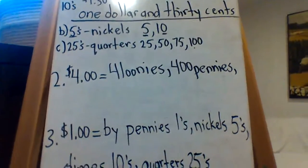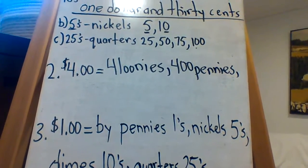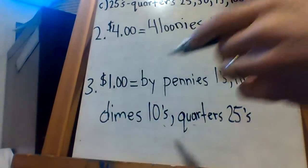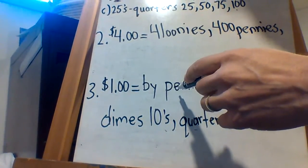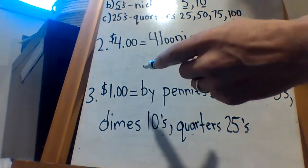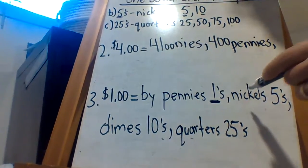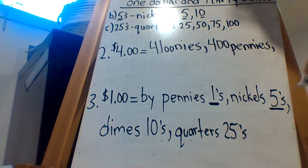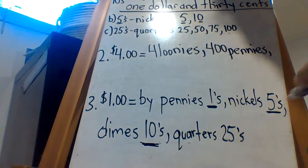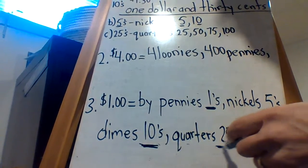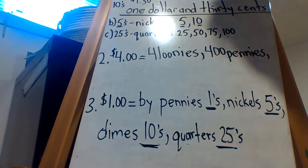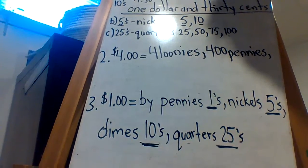even other money. And lastly, number three, tell how many of each coin make one dollar. Okay, so we're trying to make a dollar by pennies. So basically you're going to count by ones. How many ones make a hundred? Then you're going to do nickels. How many fives make a hundred? And then you're going to do dimes. How many tens make a hundred? And then you're going to do quarters. How many twenty-fives make a hundred? And we didn't even put loonies on here because you know it's one. Of course, one loonie is one dollar.